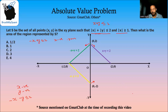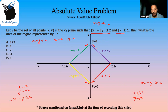In the fourth quadrant, x is positive and y is negative, so we can open the absolute value as x - y ≤ 2. We draw x - y = 2, and again it will be in this direction. So we've drawn all four lines, and if we look at their intersection, it forms this square a, b, c, d, which is the region for |x| + |y| ≤ 2.